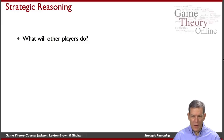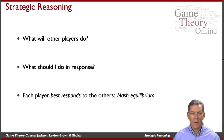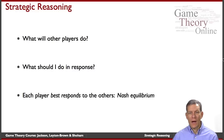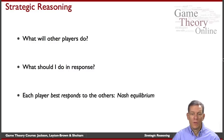You have to reason through what other players are going to do, and then what should you do in response. These are the key ingredients of a Nash equilibrium — everybody's choosing their optimal response, the one that's going to give them the maximum chance of winning, to what the other players are doing. That's going to be a Nash equilibrium.